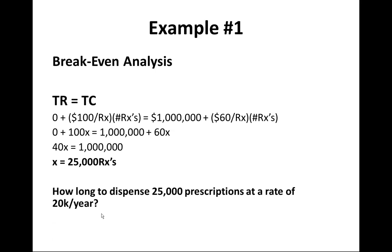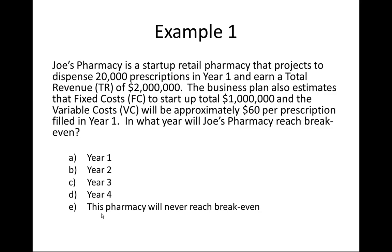So how long does it take to dispense 25,000 prescriptions at a rate of 20,000 prescriptions per year? That's essentially 1.25 years. You need 25,000 prescriptions — the extra 5,000 beyond the first year's 20,000 will be done in the first three months of the second year. So our answer is year two, or more specifically, 1.25 years — one year and three months after startup — Joe's Pharmacy will reach breakeven.